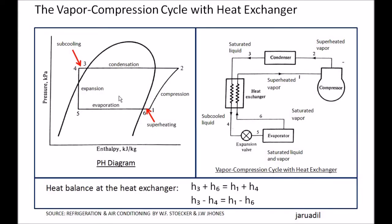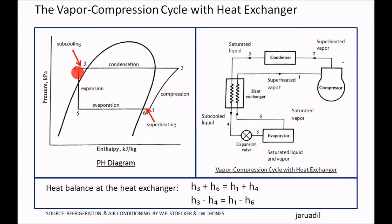Let us go to the phase chart of the vapor compression cycle with heat exchanger. As you can see here, points 3 to 4 represent subcooling. When the saturated liquid passes through, it undergoes a cooling effect because the cold refrigerant coming from the evaporator absorbs some of its heat. So it passes the saturated liquid line — subcooling occurs. Then 4 to 5 is expansion, and 5 to 6 is superheating.